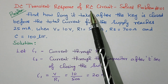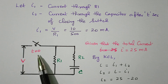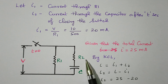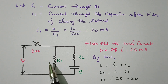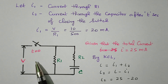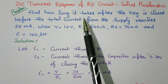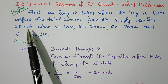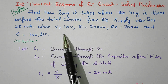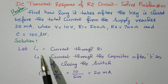DC transient response of RC circuit — resistance and capacitance. For the first problem, we will refer to the circuit diagram. The supply voltage V is given, a switch is available, and R1 is connected across the supply. R and C are connected in series — resistor R2 and capacitor C in series. The problem is to find the time taken for the current to reach 25 milliampere from the supply. Given values: supply voltage is 10 V, R1 is 500 ohm, R2 is 700 ohm, and capacitor is 100 microfarad.